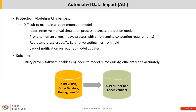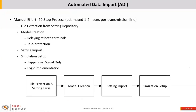The first use case addresses the challenges in protection modeling. As Sam mentioned, it's difficult to maintain a study-ready protection model. Common challenges among utilities include a labor-intensive manual process to create protection models in the short-circuit model, ease of human error, and different statuses of settings you may want pushed into the model at different stages. We have an automated solution called ADI — Automatic Data Import — that allows you to connect to your relay repository and automatically push the settings and create the models in short-circuit software such as Aspen one-liner.